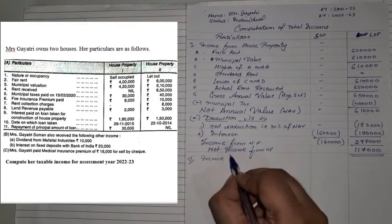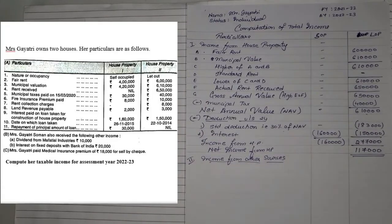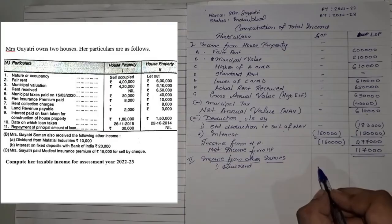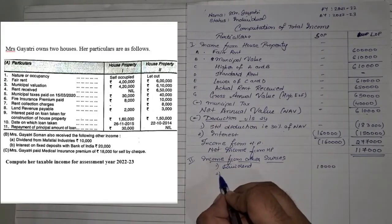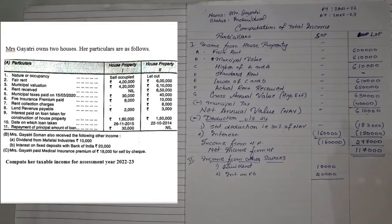We note down income from other sources. It said that Ms. Gayathri also received some other income. Number one: dividend from Mafatlal Industries. In the previous old years, dividend was exempted, but now dividend is no more exempted, so yes, it will be chargeable. Dividend is an income from other source — the amount is 10,000. Secondly, interest on FD is also income from other source, which is 20,000. They also mentioned some insurance paid, but that doesn't come here — that will come under deductions. So income from other sources is 30,000.